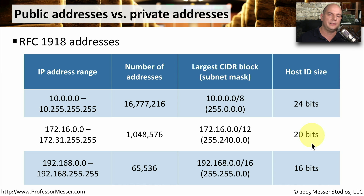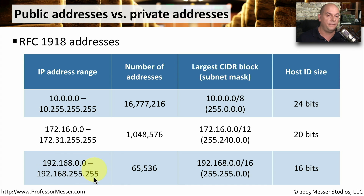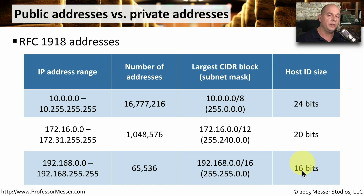On smaller networks, we tend to see the last private address group very often: 192.168.0.0 through 192.168.255.255, a total of 65,000 addresses. The first 16 bits are used as the network address and the last 16 bits are used for host IDs. If you look at the workstation you're using at home or at your office, it's probably going to use one of these three addresses, with your network administrator performing network address translation to translate your internal address to a public address used on the internet.